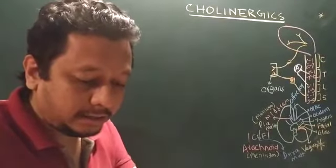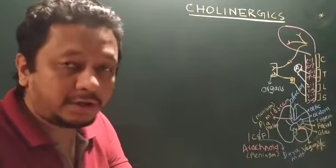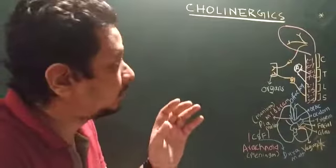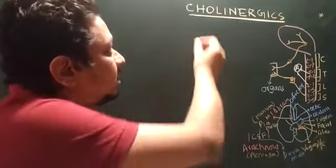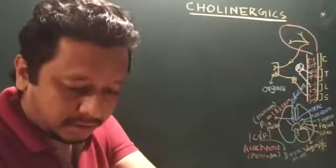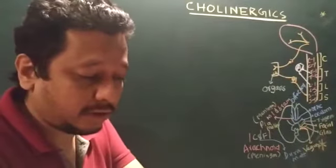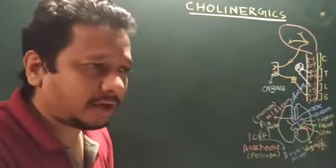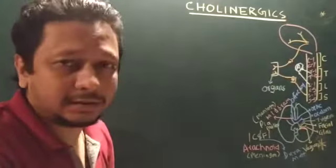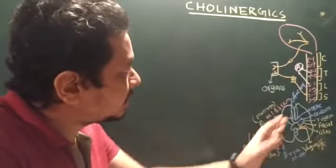This is a very important chapter — the cholinergic neurons. It is a very important chapter as per GPAT is concerned, and also in your pharmacy there is a lot of doubt on ANS. So let us understand.